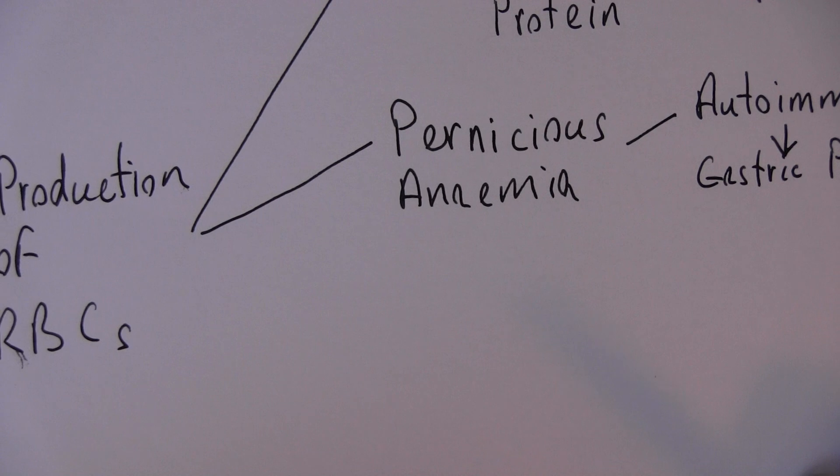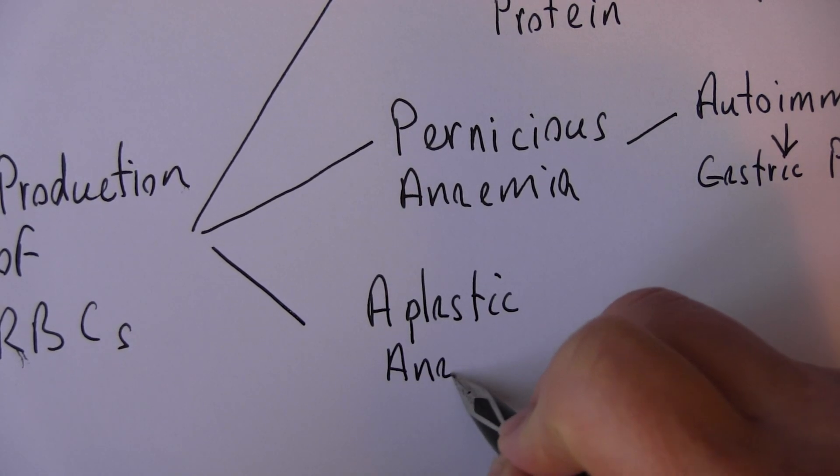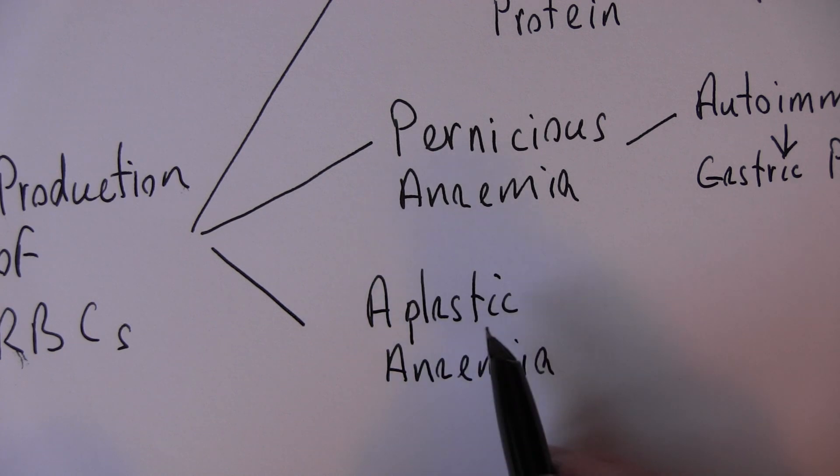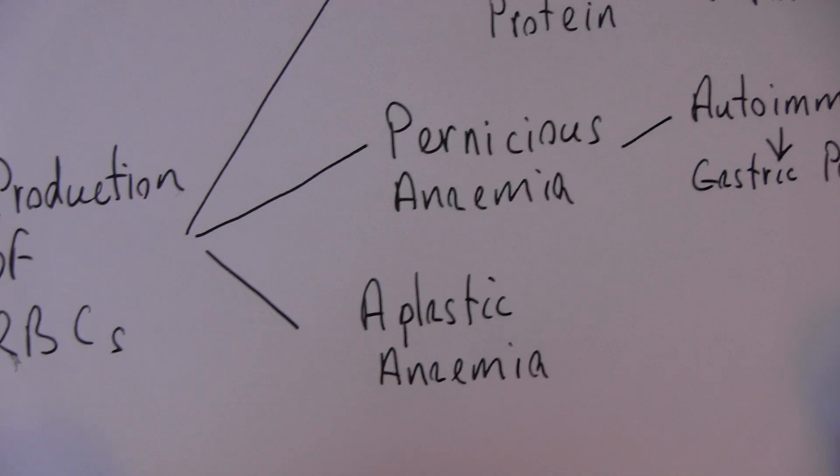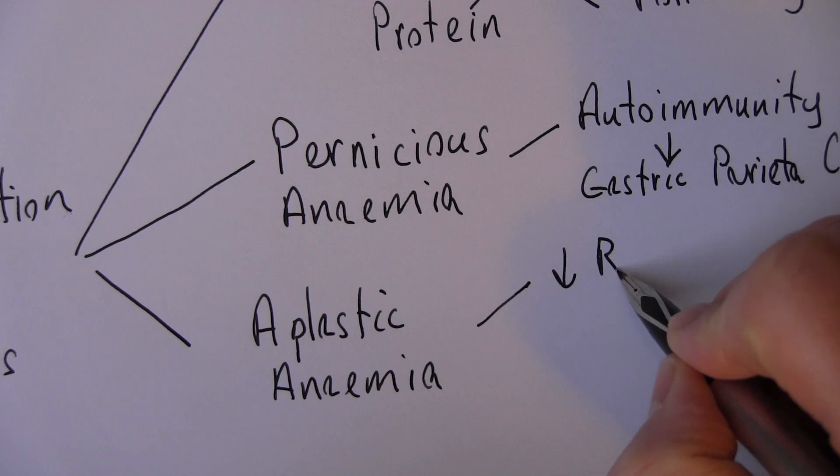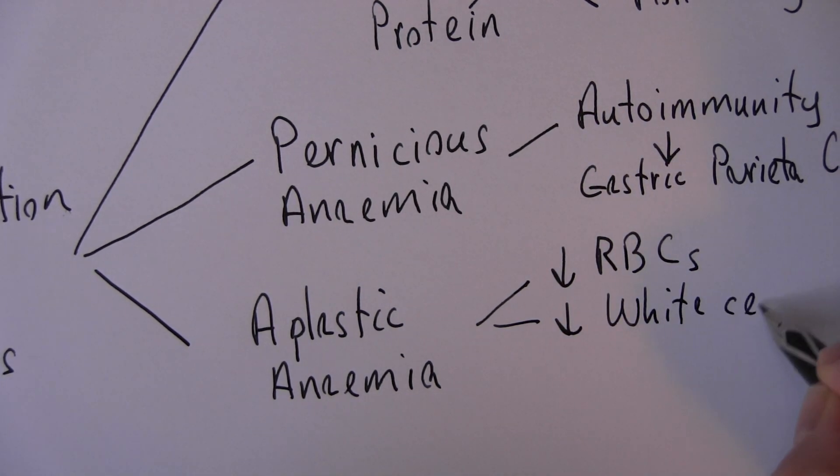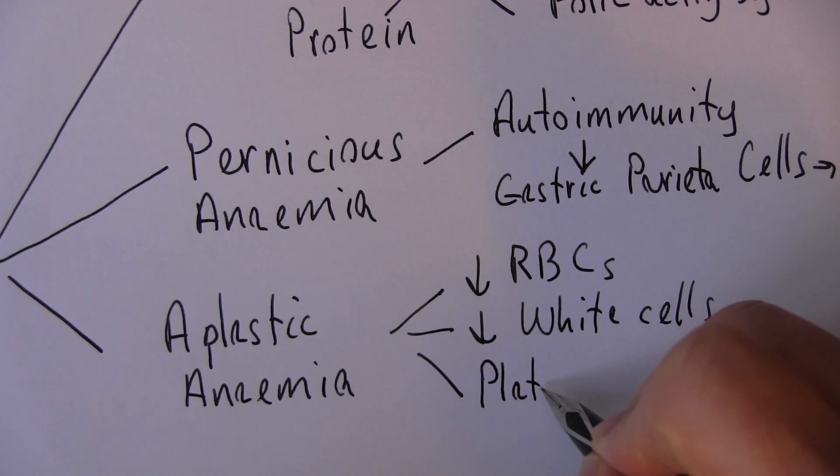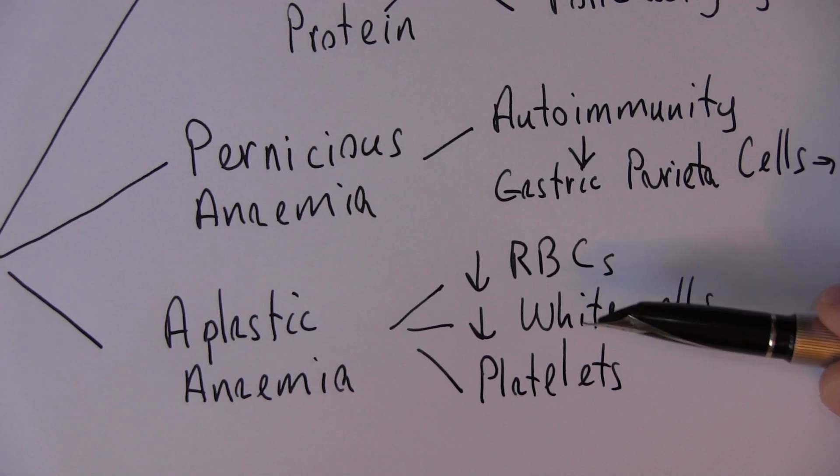Another form, quite a frightening form, is aplastic anemia. A means without, plastic means tissue. So aplastic anemia is a condition of the bone marrow where it basically stops producing, stops working. This is bone marrow failure. In aplastic anemia we don't get the red blood cells, but neither do we get the white cells, neither do we get that other essential blood product, the platelets. We don't get the erythrocytes, we don't get the leukocytes, and we don't get the thrombocytes.